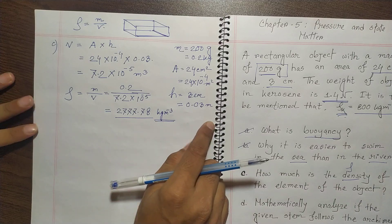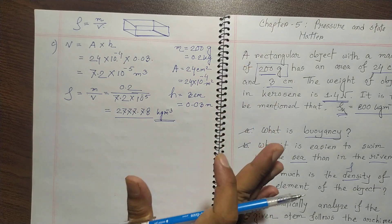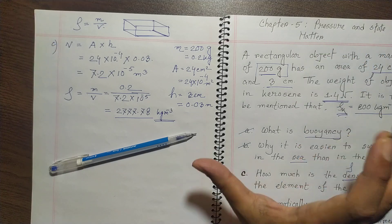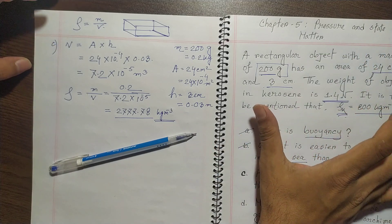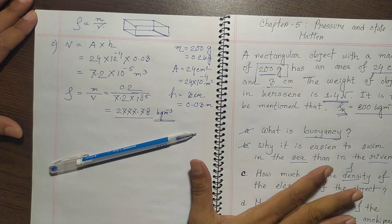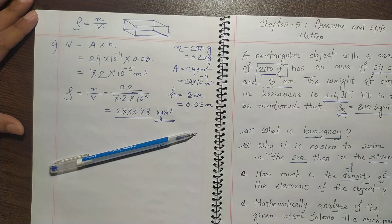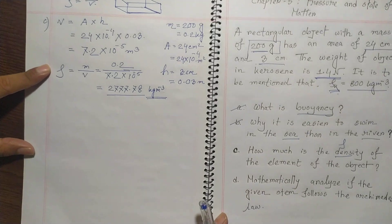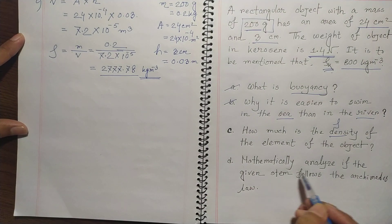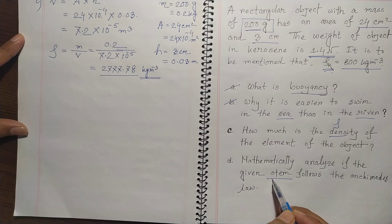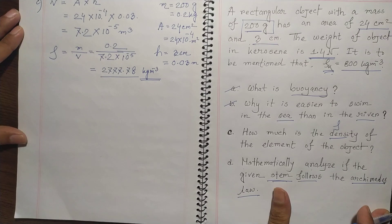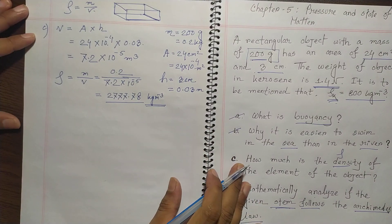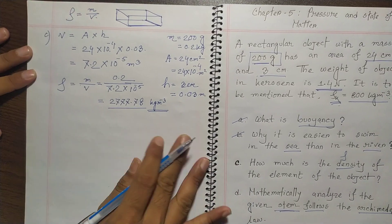This is straightforward, but for preliminary students who have studied the chapter theoretically and are now trying to solve creative questions — this is the first creative solution approach. We found the volume first, then obtained the density. Now for the last question: mathematically analyze if the given stem follows Archimedes' Law. Archimedes' Law is about how much weight an object actually loses when submerged.